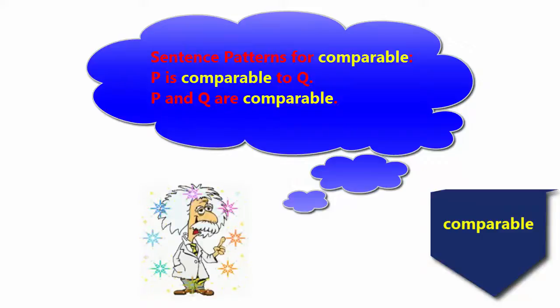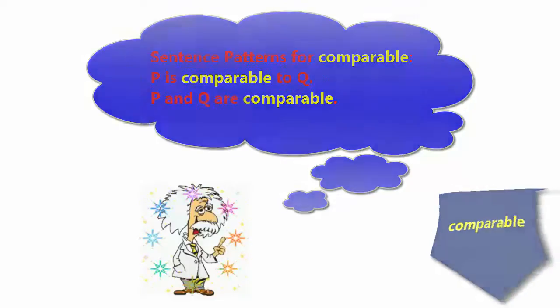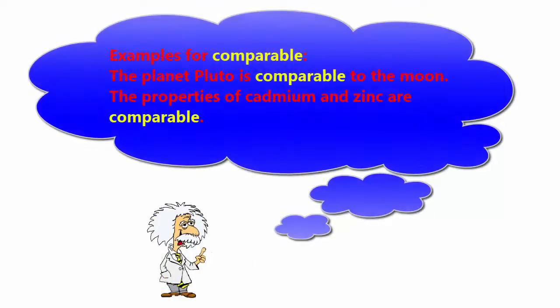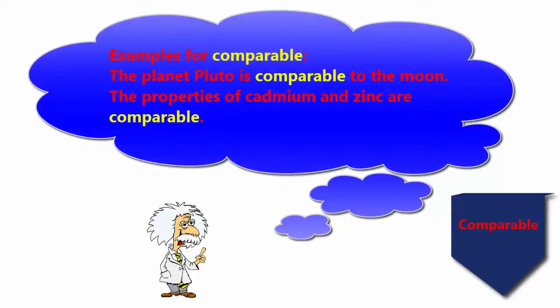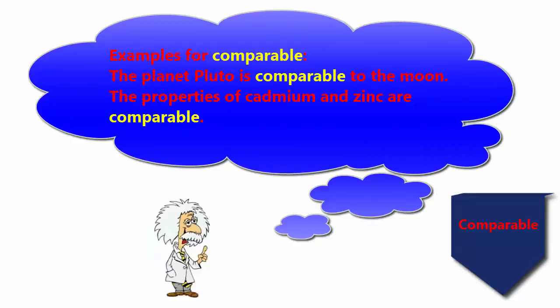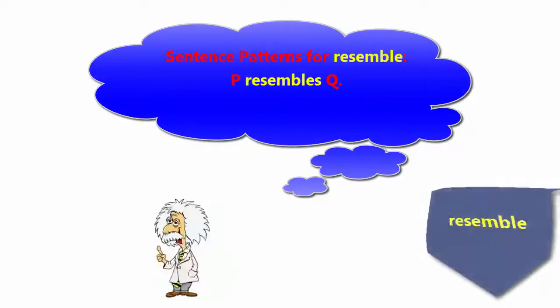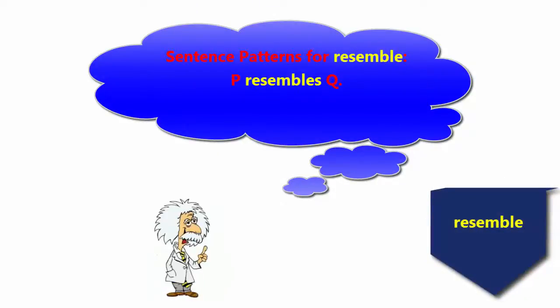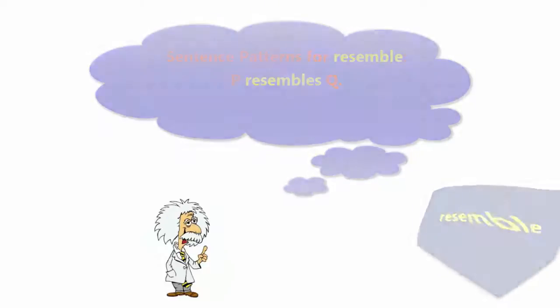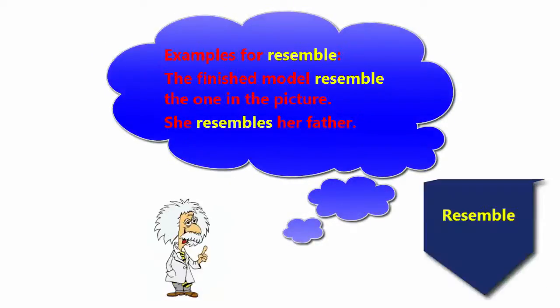to Q. P and Q are comparable. Examples for comparable: The planet Pluto is comparable to the moon. The properties of cadmium and zinc are comparable. Sentence pattern for resemble: P resembles Q. Examples for resemble: The